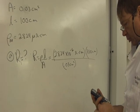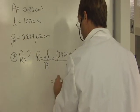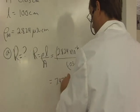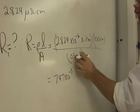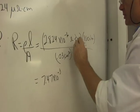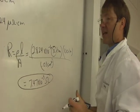It's 7.47 times 10 to the minus 3. Now, centimeters times centimeters is centimeters squared, which cancels with these centimeters squared. And so I'm just going to get ohms.